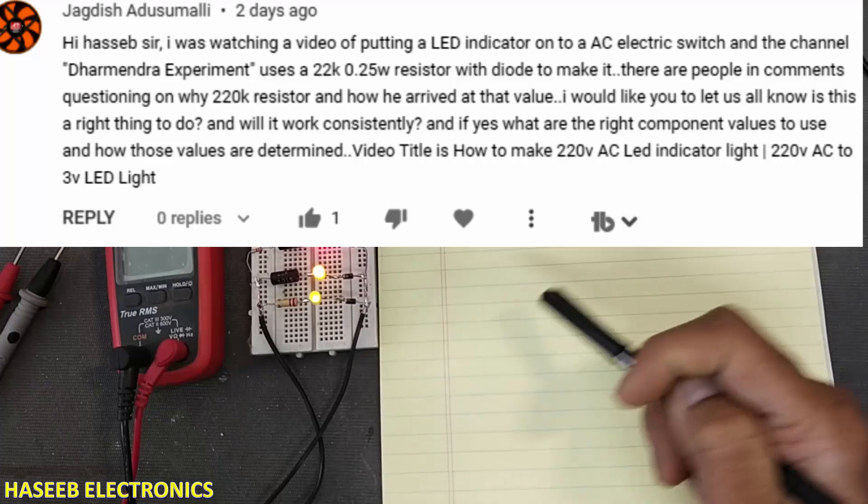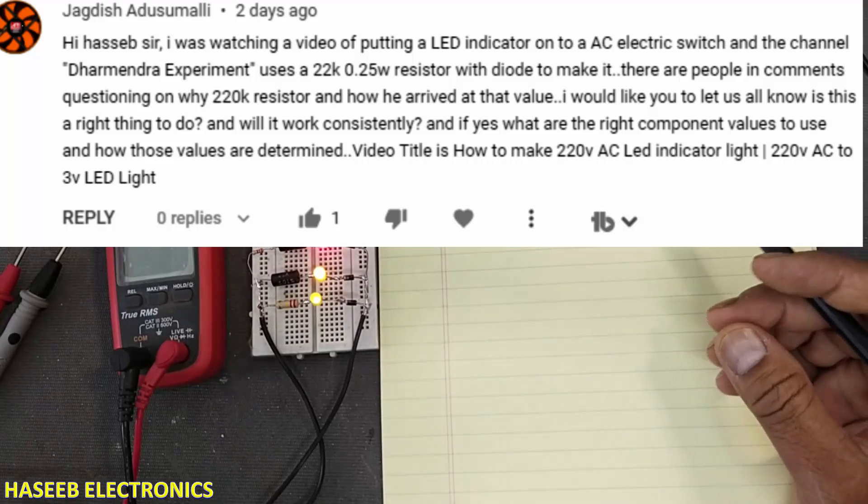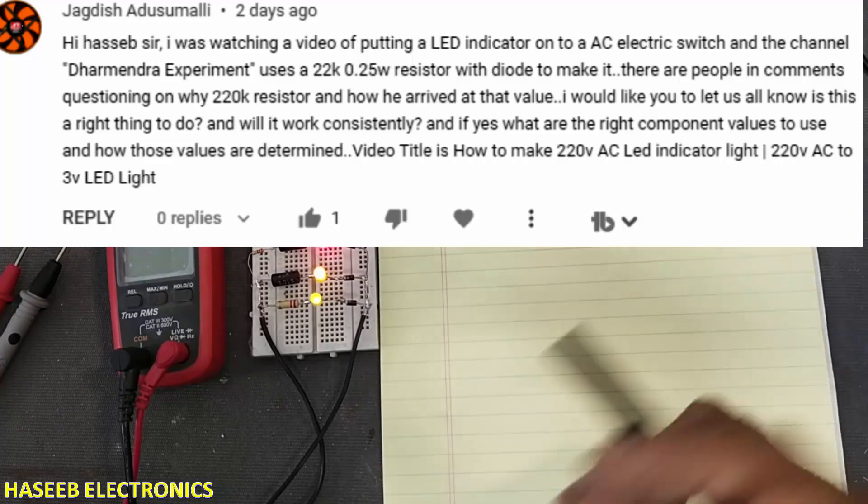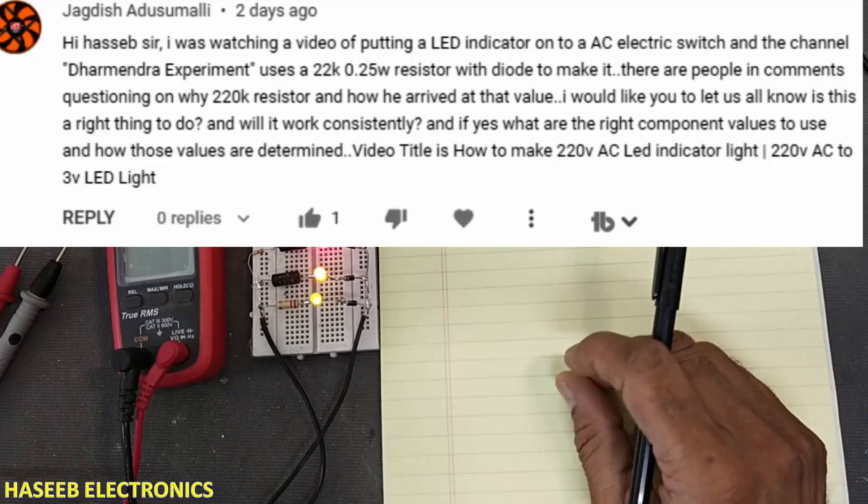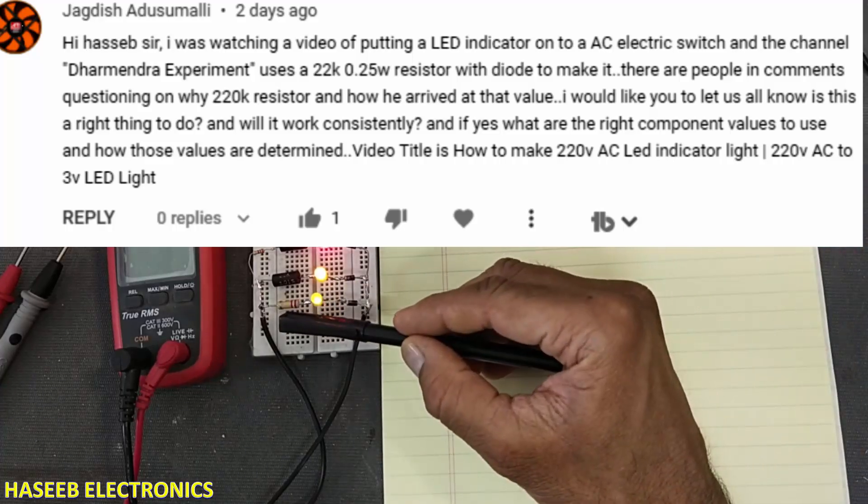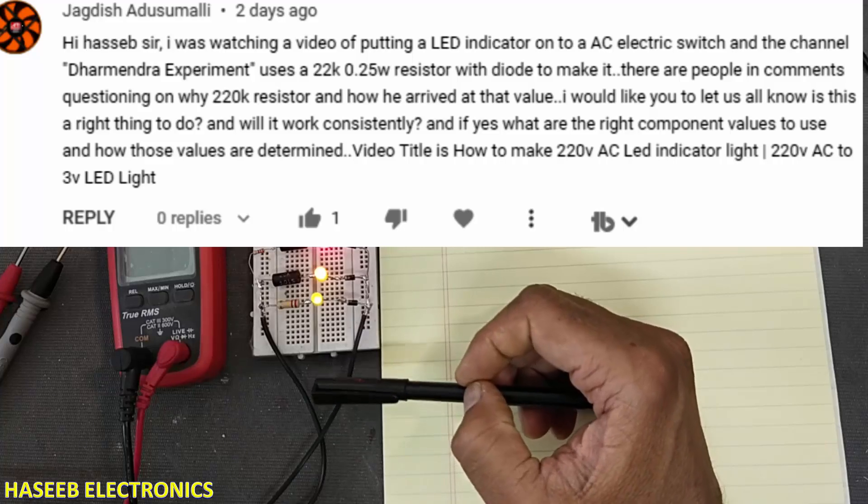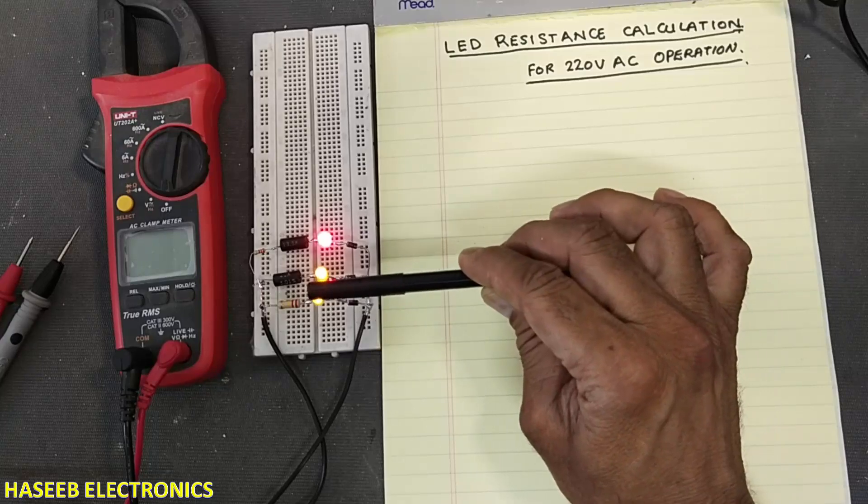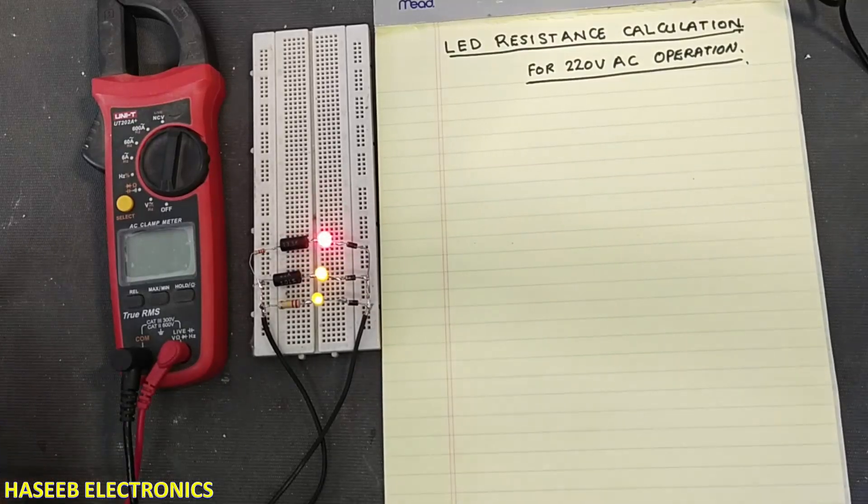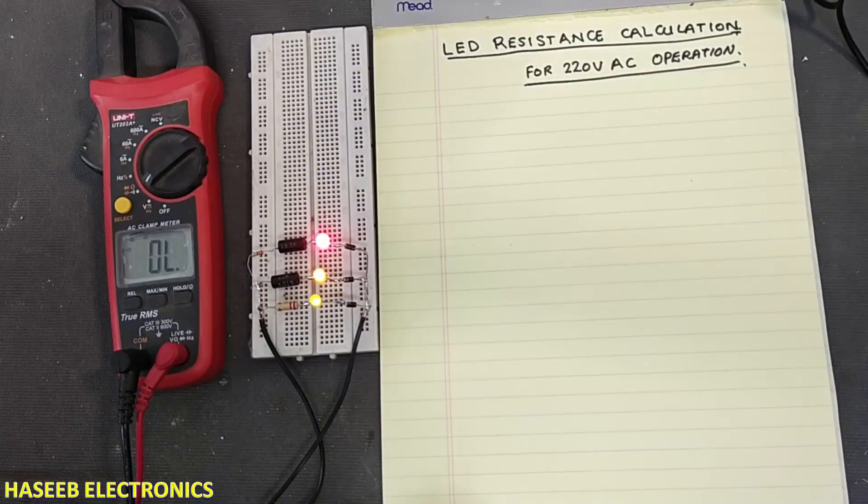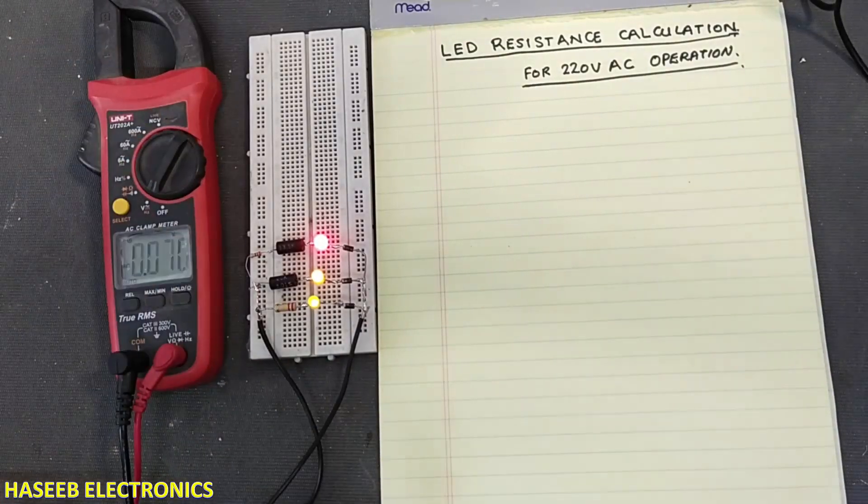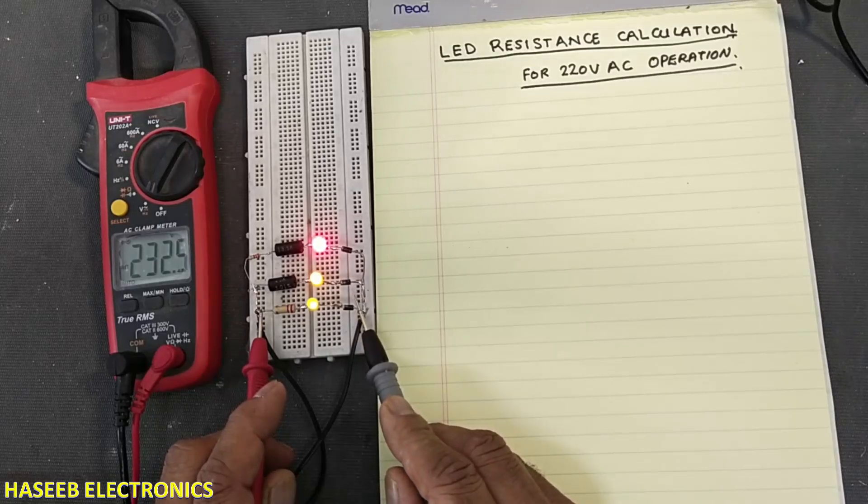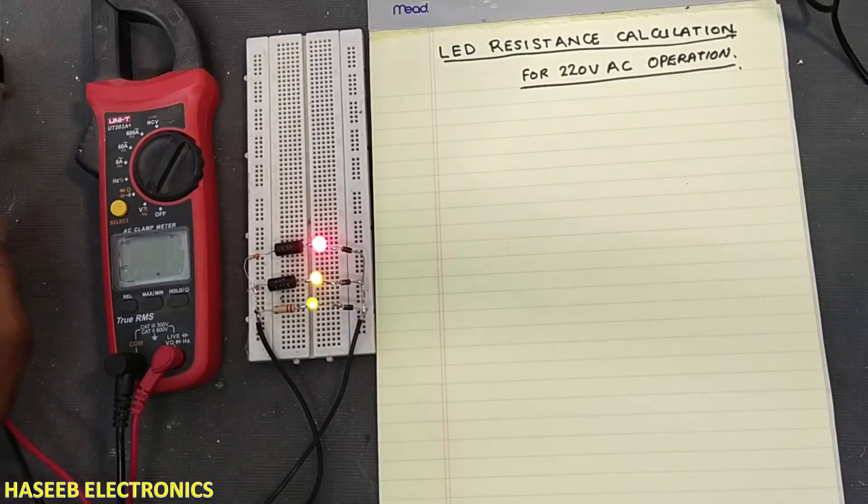Basically it is a question from my viewer. He said he watched a video from Dharmendra experiment channel. In that channel Mr. Dharmendra used 220 kohm resistor 0.25 watt resistor with LED to power it up. But I am using three different type of resistors. I am applying 232 volts. Let's calculate.